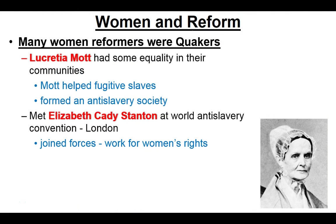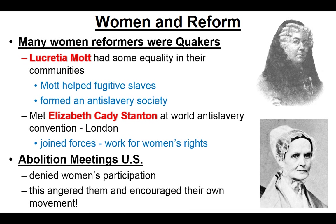Many women reformers were Quakers. If you remember from the colonial period, Pennsylvania was settled by a large number of Quakers — they were pacifists and they saw everybody as being equal regardless of race, color, or religious background. Lucretia Mott in particular was one of them, and she had a relative amount of equality in her world because of that Quaker mindset.